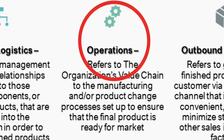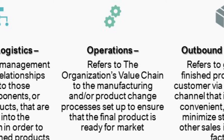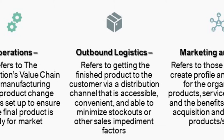In primary activities, we also have operations — the manufacturing or change of processes employed to produce the product. For example, we have production lines producing certain parts and assembly lines assembling these parts into the actual final product.